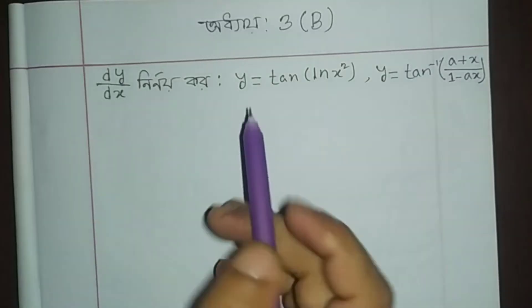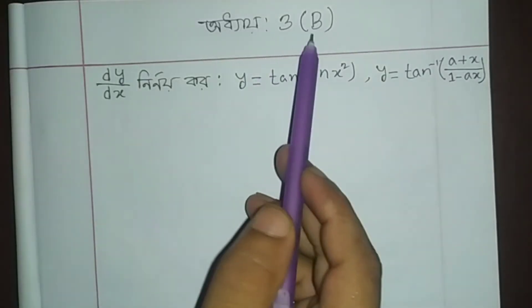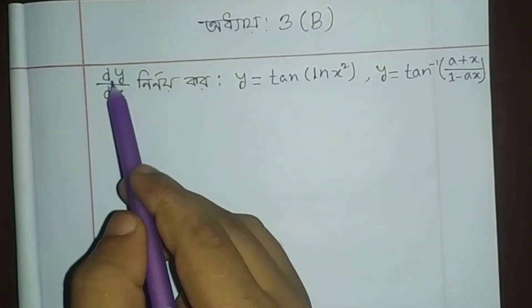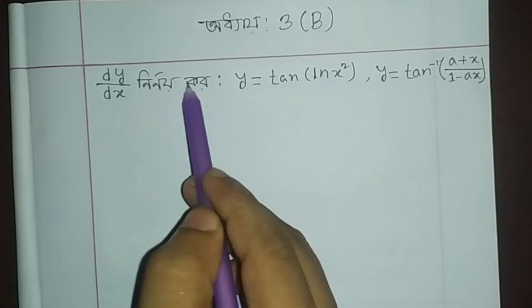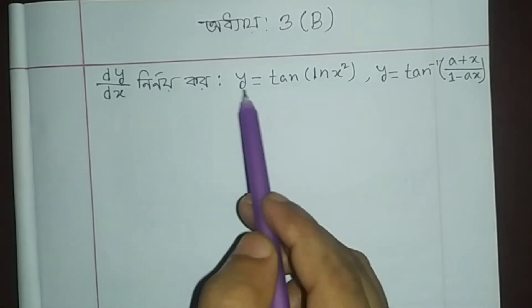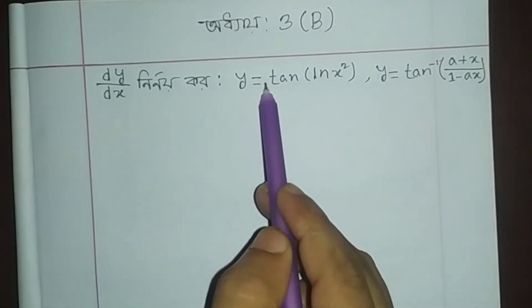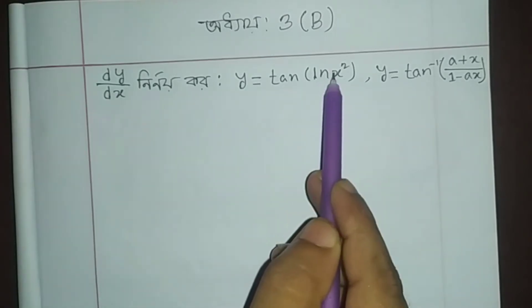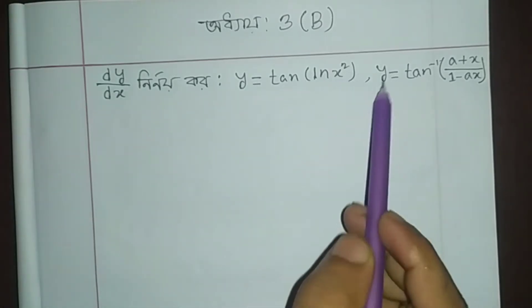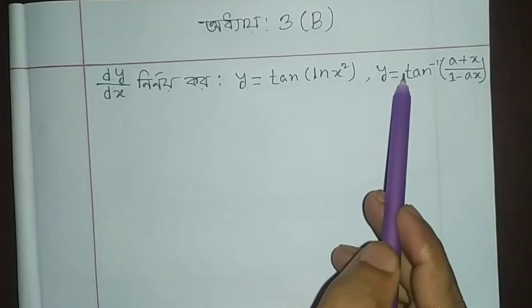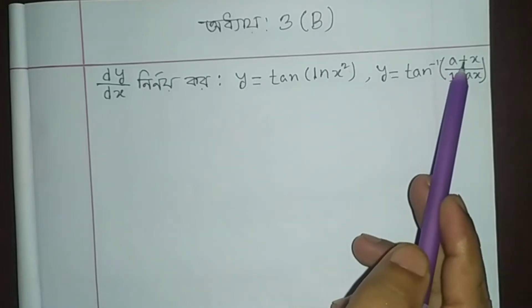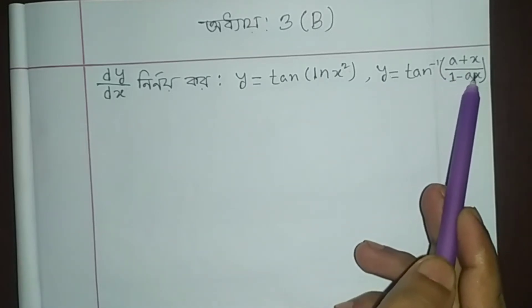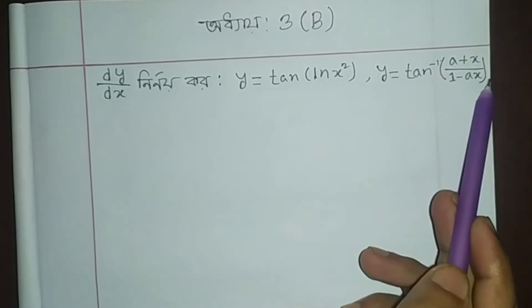Hello. dy/dx. y equals 10 ln x squared. Ten inverse a plus x, one minus ax.